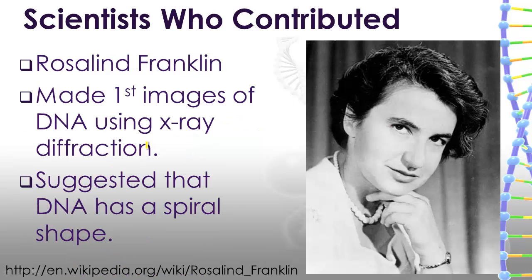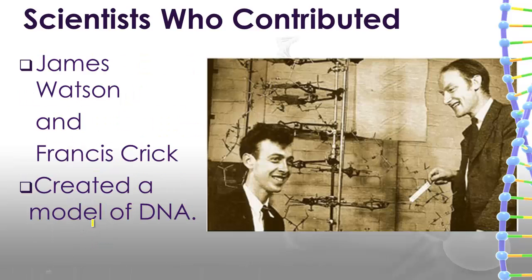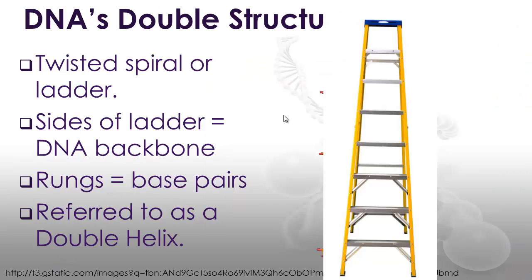Rosalind Franklin was the first to make an image of the DNA molecule using a technique called X-ray diffraction, and this suggested that DNA had a spiral shape. And lastly, we have James Watson and Francis Crick, who were able to use their work and the work of the other scientists to create a three-dimensional model of the DNA molecule showing this double helix structure.